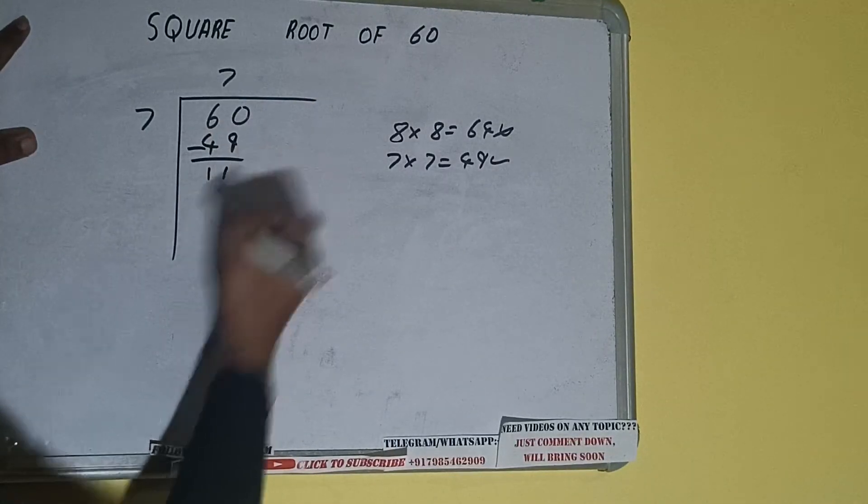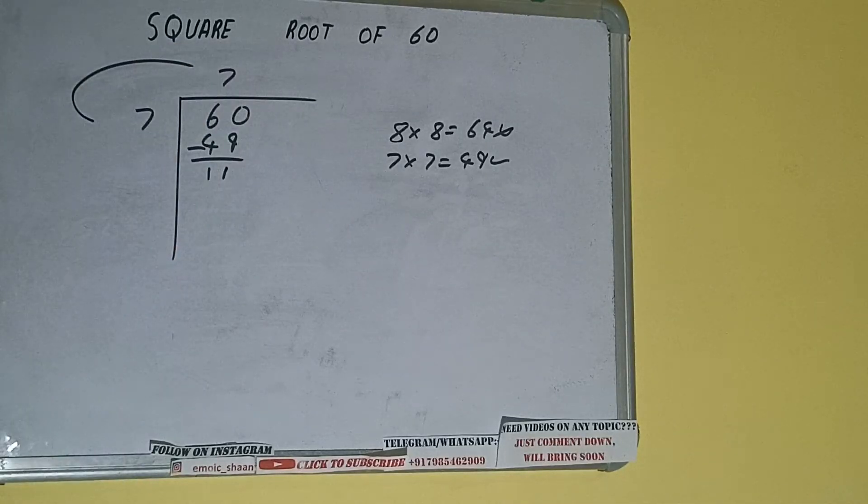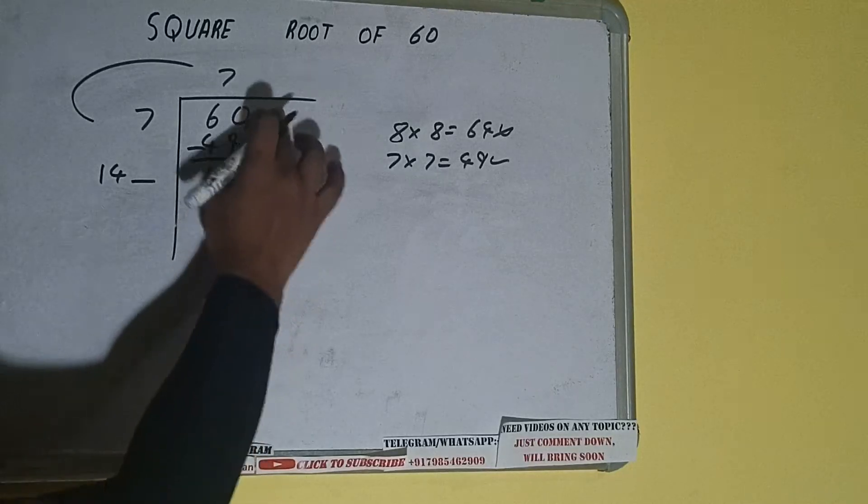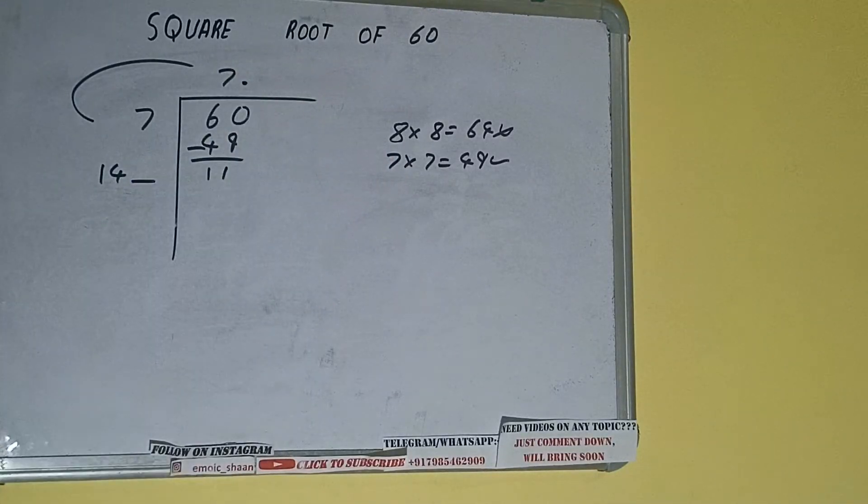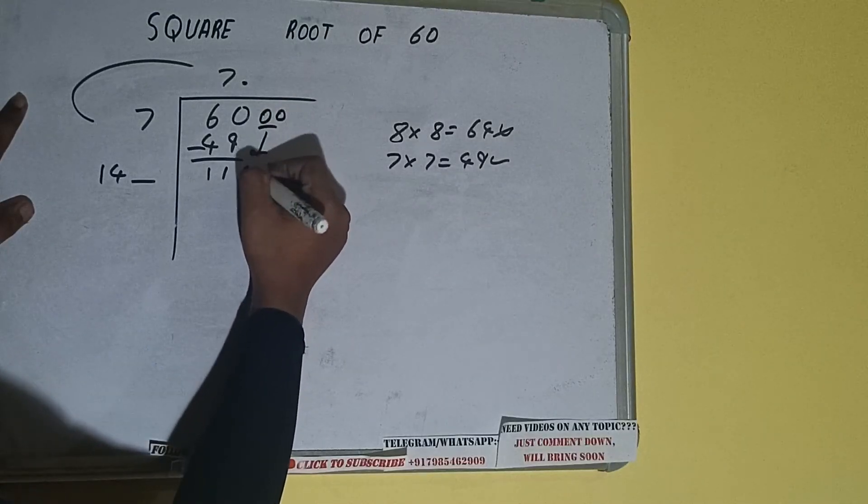Subtract, 11 will be left. We did 7 into 7, so add both, so 7 plus 7 will be 14. Write it here and keep it extra. This number we need to make it big, but we don't have more pairs, so we'll put a decimal. Once we put a decimal, we can bring a pair of zeros down, and it will be 1100.